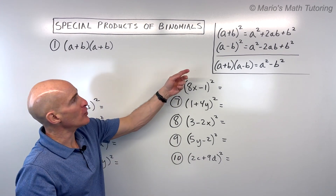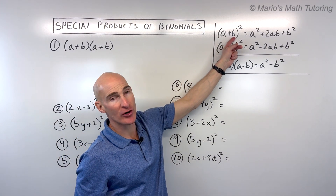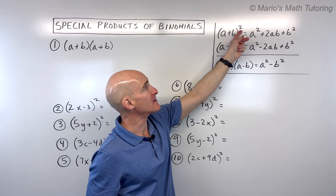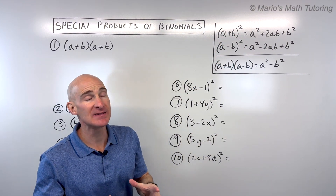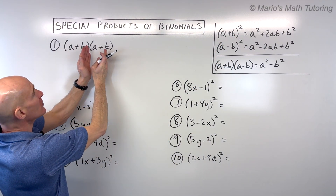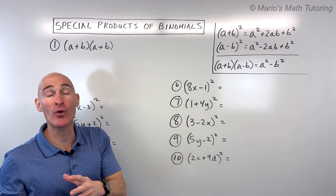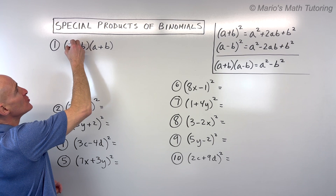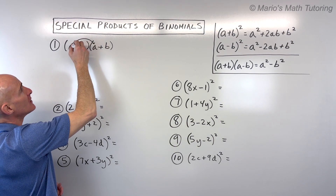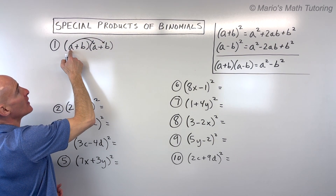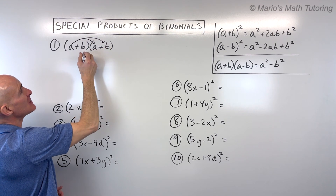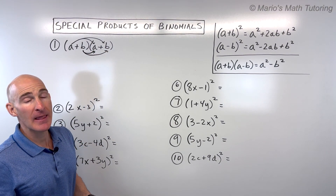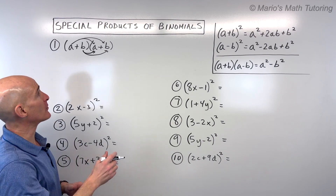When you're squaring a binomial — remember, binomial means two terms separated by plus or minus — and when you take that quantity to the second power, what it really means is that you're multiplying that binomial times itself. It's like you have two of that quantity multiplied together. You can do the distributive property twice: a times a, a times b, then b times a, and b times b, and then combine like terms.